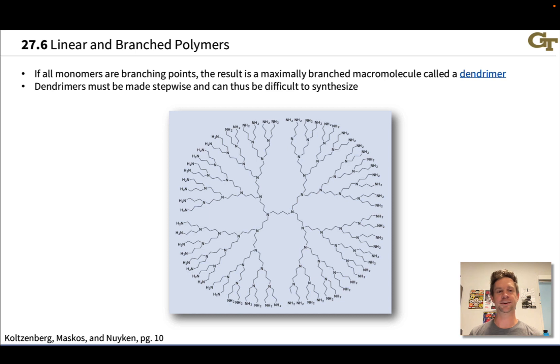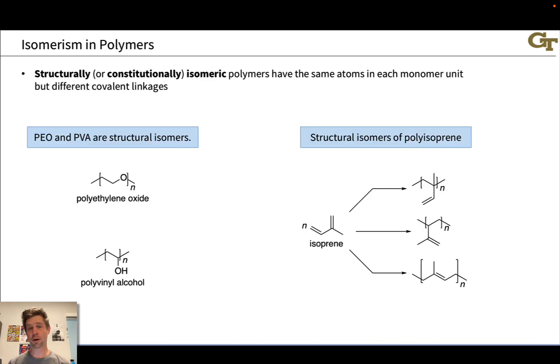Because these are maximally branched, they have to be made stepwise. We have to make the first layer first and then add on the next layer. These can be very difficult to synthesize in practice as a result. We can't just mix together a bunch of monomer units and wait. We have to add each layer of new monomer units in a separate chemical step.